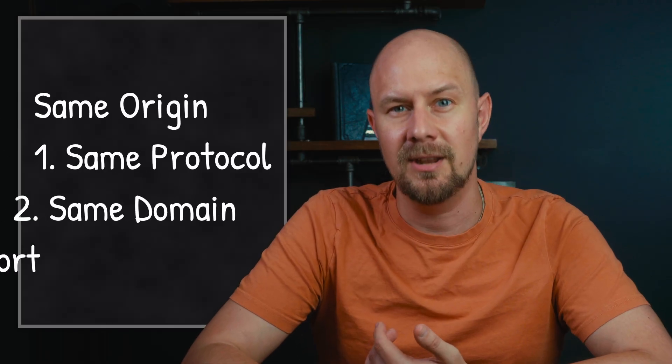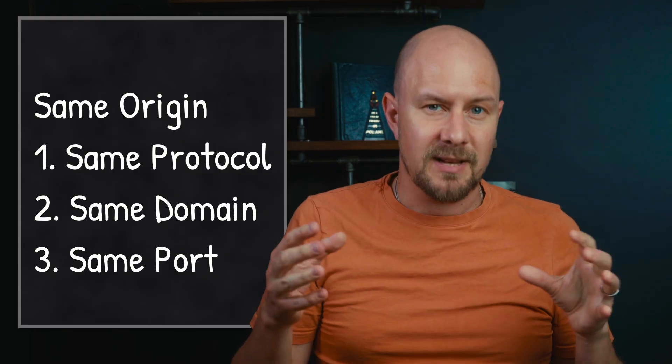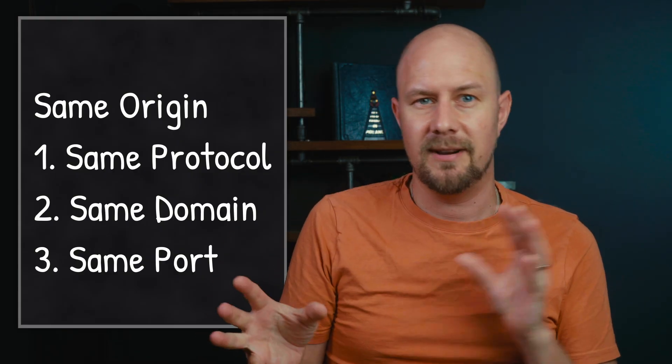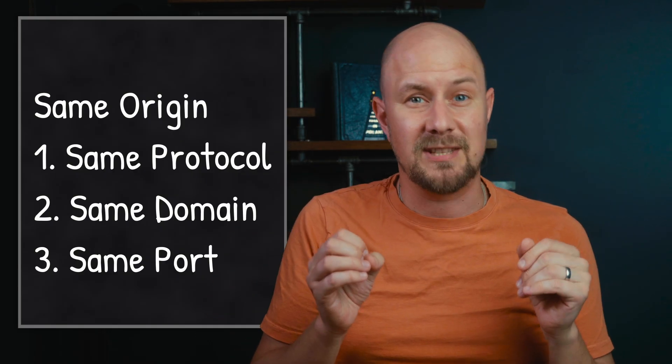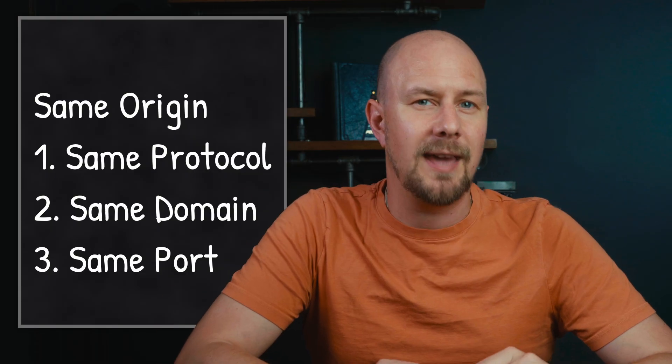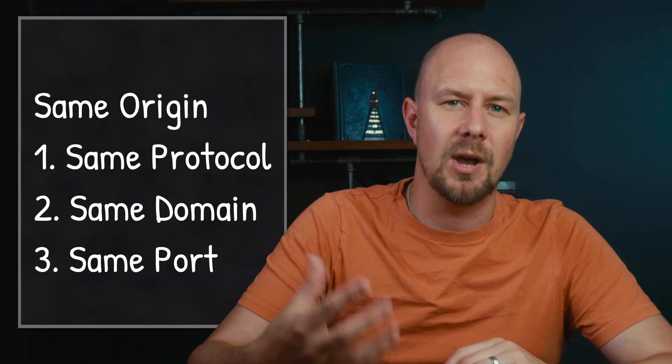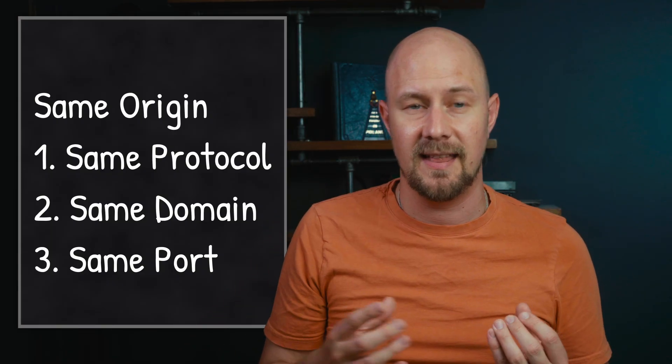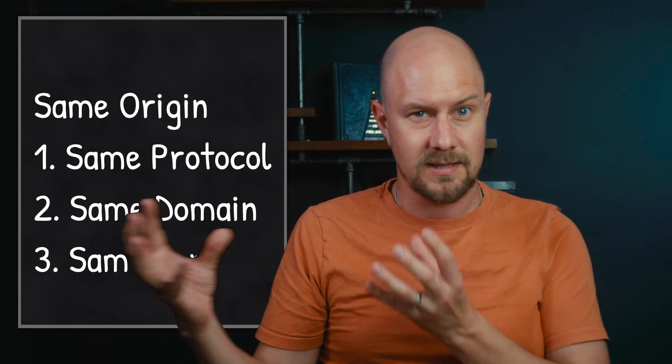By 'same origin', it means that all three of these things must match: it must be the same protocol — HTTP or HTTPS — it must be exactly the same domain, like mybank.com, and it must be the same port. For a while that was okay, because in a world of servers doing ASP.NET pages, the front end was only talking to one server. But these days, if you're building applications that pull from multiple different APIs, microservices, content distribution networks — all in different places — they might be on different domains or subdomains, so you're going to need to make cross-origin requests.